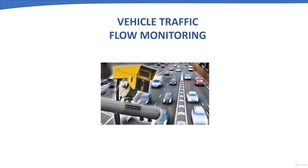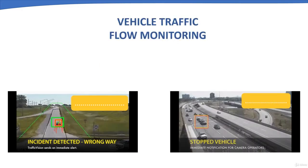Vehicle traffic flow monitoring: In many countries, CCTV systems are used as part of an advanced traffic management system to control and monitor vehicle traffic on highways and roads. These cameras are very special — they take a photo or video of the vehicle number plate whenever a vehicle exceeds the speed limit. Some advanced cameras can generate alarms inside the control room when a vehicle stops on a highway or is moving in the wrong direction.